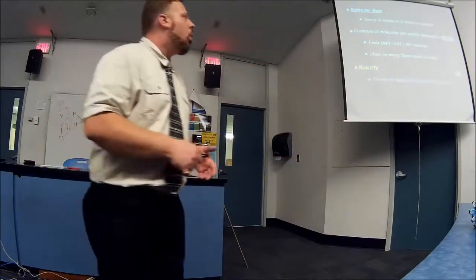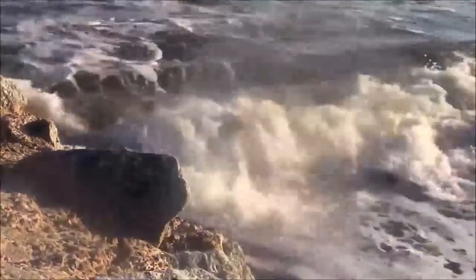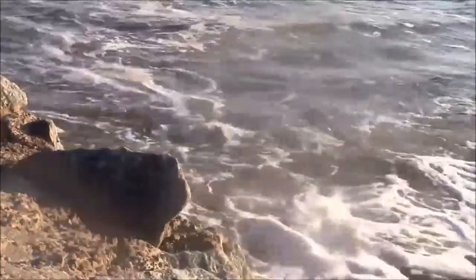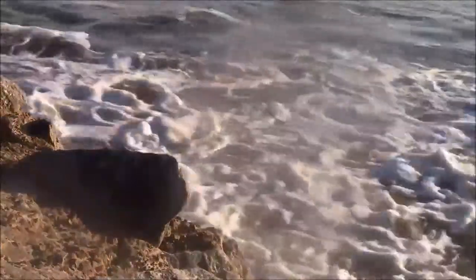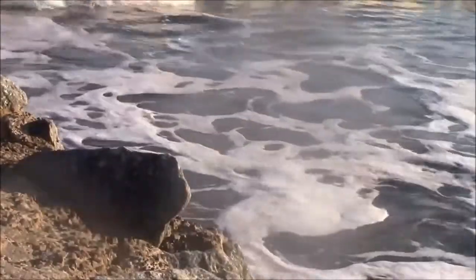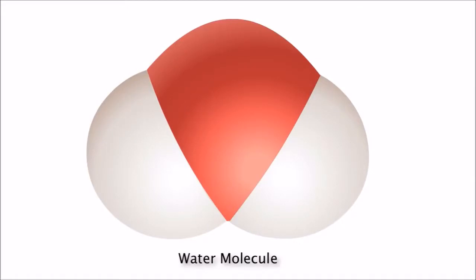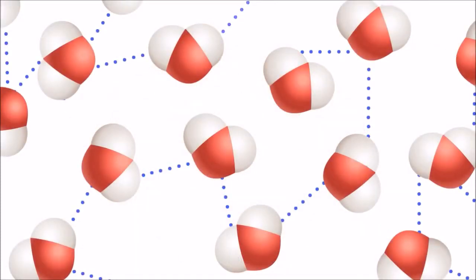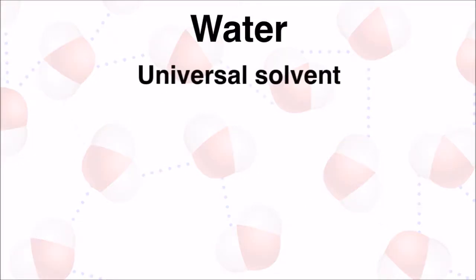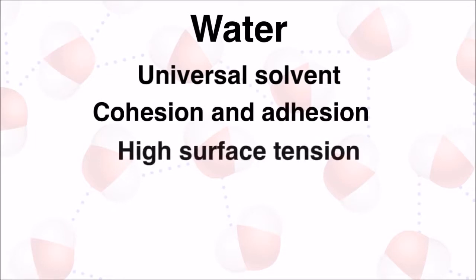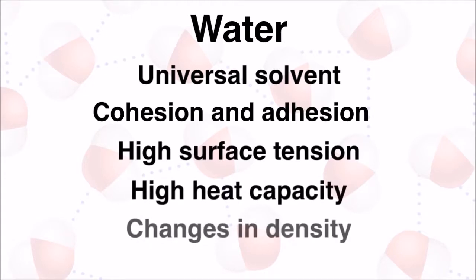Life as we know it would not exist without water. Over 70 percent of the planet is covered in water and our bodies are around 70 percent water. Water's structure and its ability to form hydrogen bonds with multiple other molecules simultaneously gives it very unique characteristics: acting as a universal solvent, cohesion, adhesion, high surface tension, high heat capacity, and density changes based on temperature.